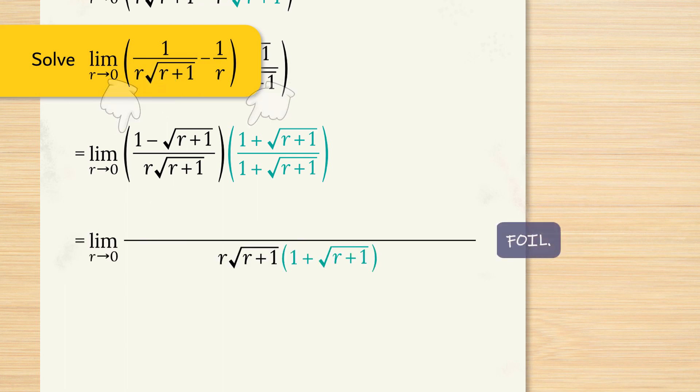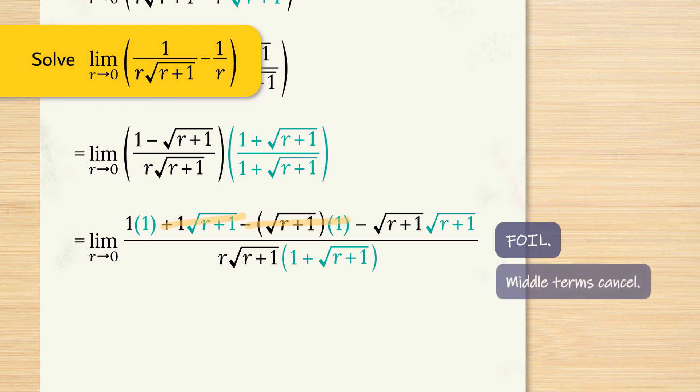And then foil to expand. The first terms, 1 times 1. The outer terms, 1 multiplied by the square root of r plus 1. Inside terms, negative square root of r plus 1 multiplied by 1. And then last terms, negative square root r plus 1 multiplied by a positive square root of r plus 1. The reason that we multiply by the conjugate is because we get a difference for these middle terms. They cancel by addition and subtraction. The first terms multiply to 1.